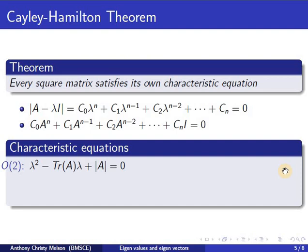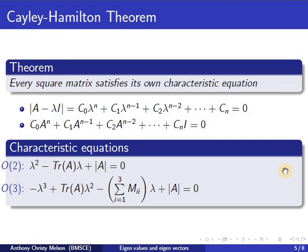For a third order matrix, the characteristic equation would be minus lambda cubed plus trace of A into lambda squared minus sum of the principal minors into lambda plus determinant A equal to 0. Now we apply theory of equations to these characteristic equations. We find that the sum of the eigenvalues is equal to trace of the matrix and the product of the eigenvalues is equal to the determinant.